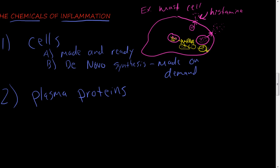Then those will get fused with the membrane and they'll spit their contents out. So there are two ways which these chemical markers of inflammation can be secreted by the cell. One is that they're already made and ready, waiting to go. Or two, de novo synthesis, which is they're made on demand.